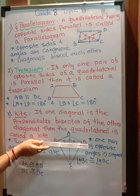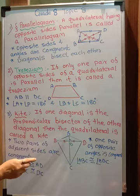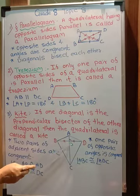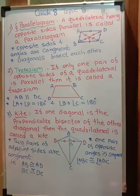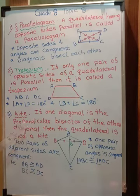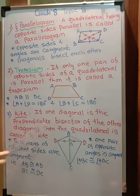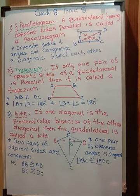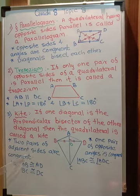BD is divided into two equal parts and angle AOB is 90 degrees. Look at the definition: if one diagonal is the perpendicular bisector of the other diagonal, then the quadrilateral is called a kite. Based on this, see the properties. Two pairs of adjacent sides are congruent. Adjacent means which are near to each other.